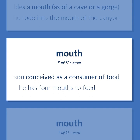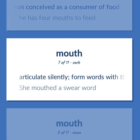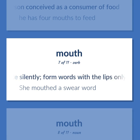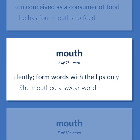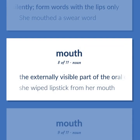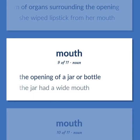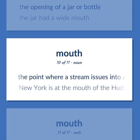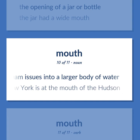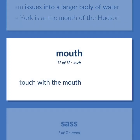Mouth: A person conceived as a consumer of food — "He has four mouths to feed." Articulate silently; form words with the lips only — "She mouthed a swear word." The externally visible part of the oral cavity on the face and the system of organs surrounding the opening — "She wiped lipstick from her mouth." The opening of a jar or bottle — "The jar had a wide mouth." The point where a stream issues into a larger body of water — "New York is at the mouth of the Hudson."